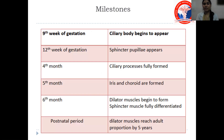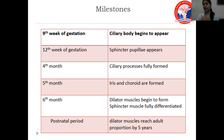Key embryological milestones: by the ninth week of gestation, the ciliary body begins to appear. By the twelfth week, the sphincter pupillary appears. By the fourth month, ciliary processes are fully formed. By the fifth month, the iris and choroid are formed. By the sixth month, the dilator muscle begins to form and the sphincter muscle is fully differentiated. In the postnatal period, the dilator muscles reach adult proportion by the age of five years. Therefore, at birth, the sphincter muscles are fully developed but the dilator muscles are not, which is why the pupil does not dilate fully in neonates and young children.